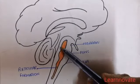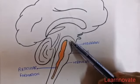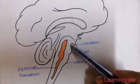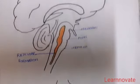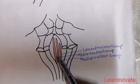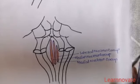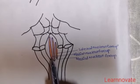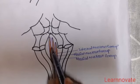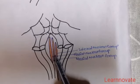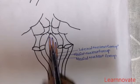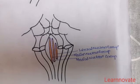The reticular formation has many connections with different areas of the central nervous system, including afferent and efferent connections. Looking at the general arrangement, if we take a cross section we can see the nuclear fibers and bundles and how the nuclear groups are arranged. There are three groups of nuclei: the median nuclear group, the medial nuclear group, and the lateral nuclear group. The median group has intermediate-length neurons, the medial group has long neurons, and the lateral group has small neurons.